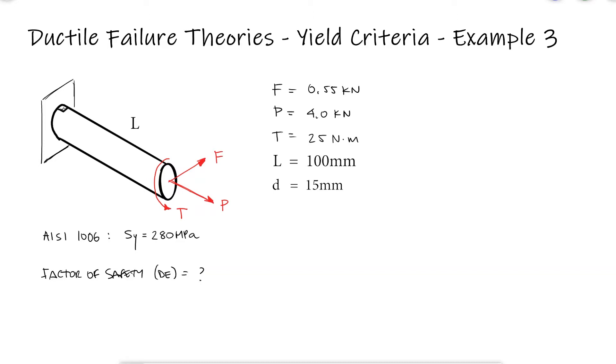There are two critical stress elements to consider, A and B. The main difference is that element B will be subjected to bending, while element A will be subjected to shear.